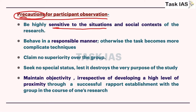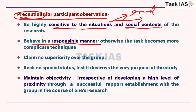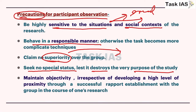Precautions for participant observation include: first, be sensitive to situations and social context — for example, if someone is asked about sexual life experiences or any tragedy, the researcher should be sensitive. Second, behave in a responsible manner, otherwise people will resist sharing data. Third, there should be no superiority or inferiority complex, as earlier armchair anthropologists had. Fourth, don't seek any special status because it will destroy the natural environment of the study. Fifth, maintain objectivity despite close linking with community members — always remember that you are observing the event for collecting data.